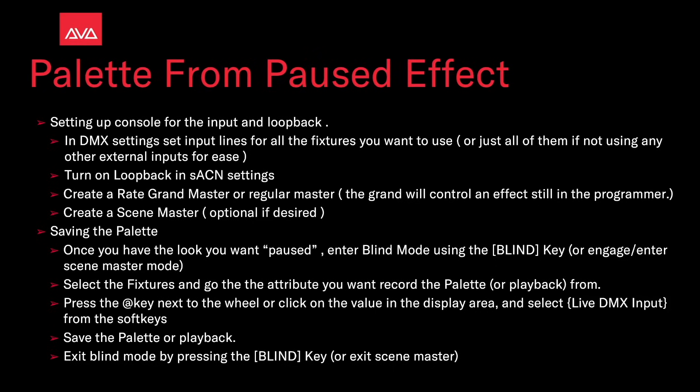Once you have the look you want paused, either enter blind mode using the blind key or engage the Scene Master mode. Select the fixture and go to the attribute you want to record the palette or playback from. Press the AT key next to the wheel, or click on the value in the display area, and select Live DMX input from the soft keys. Then save the palette or playback. Use the blind key again or exit the Scene Master mode.